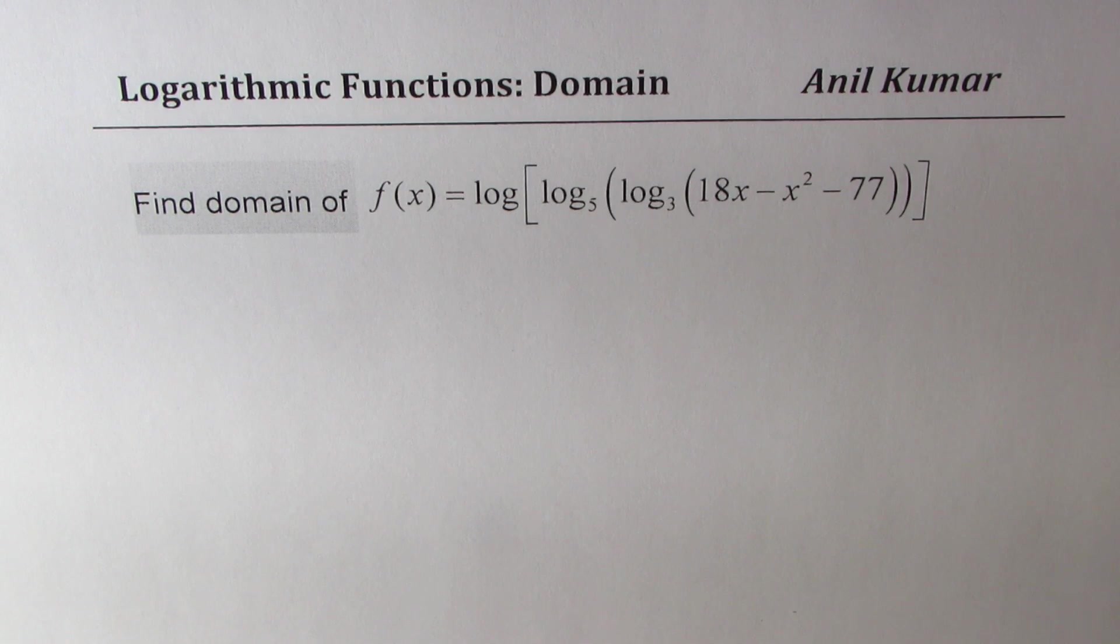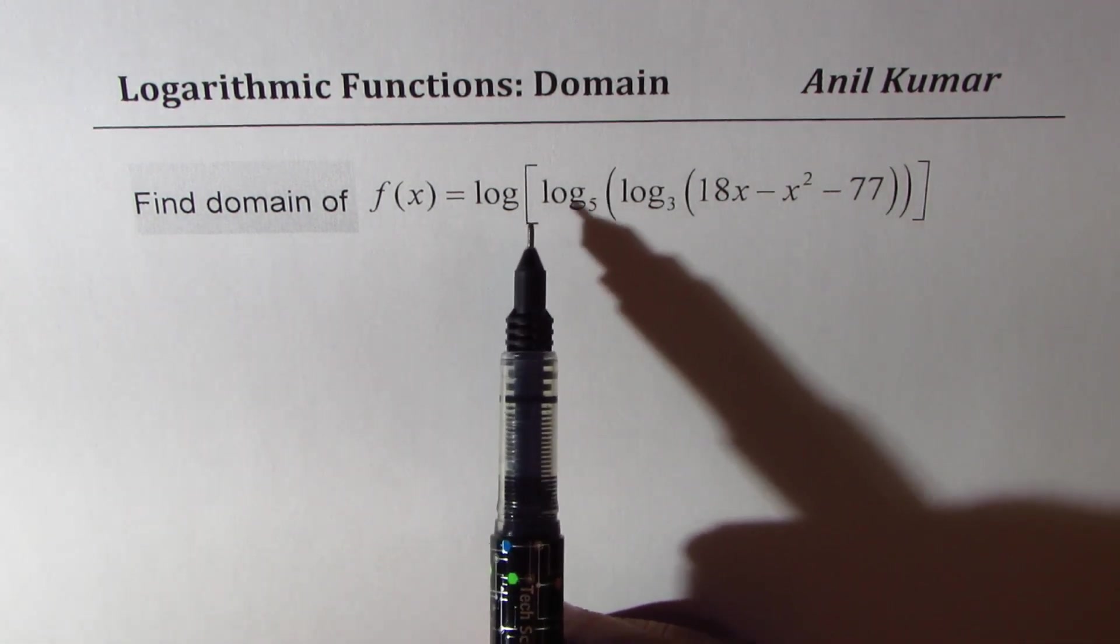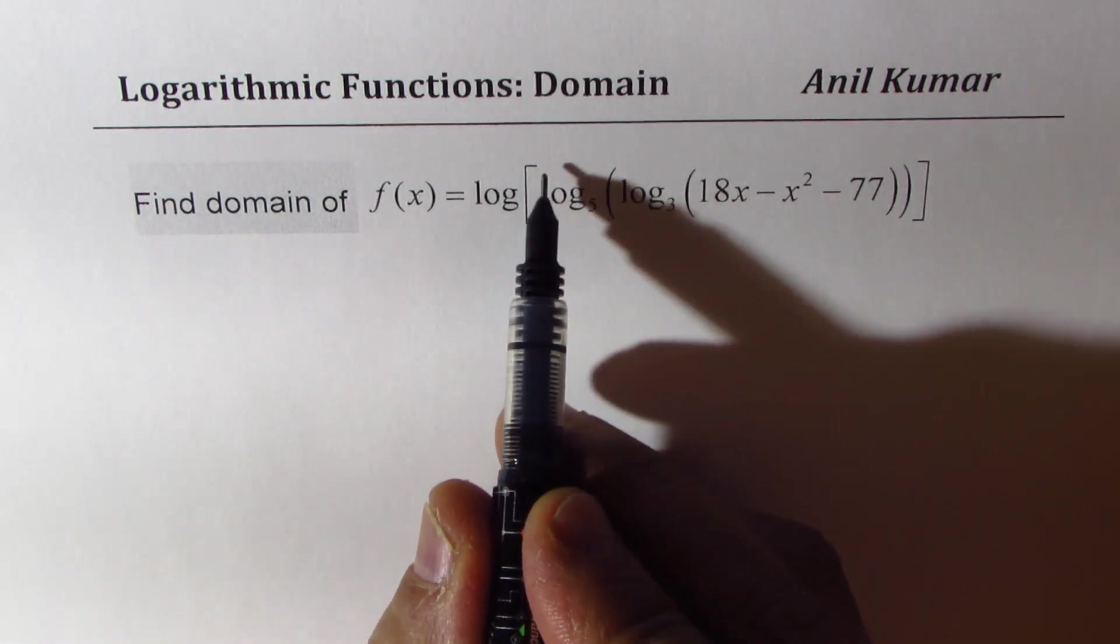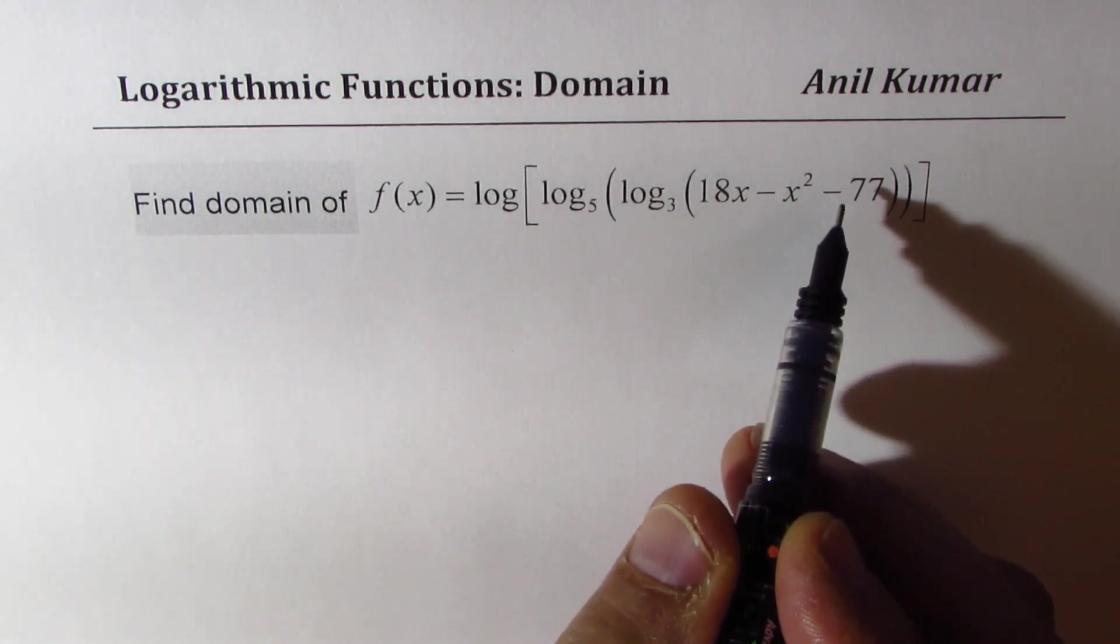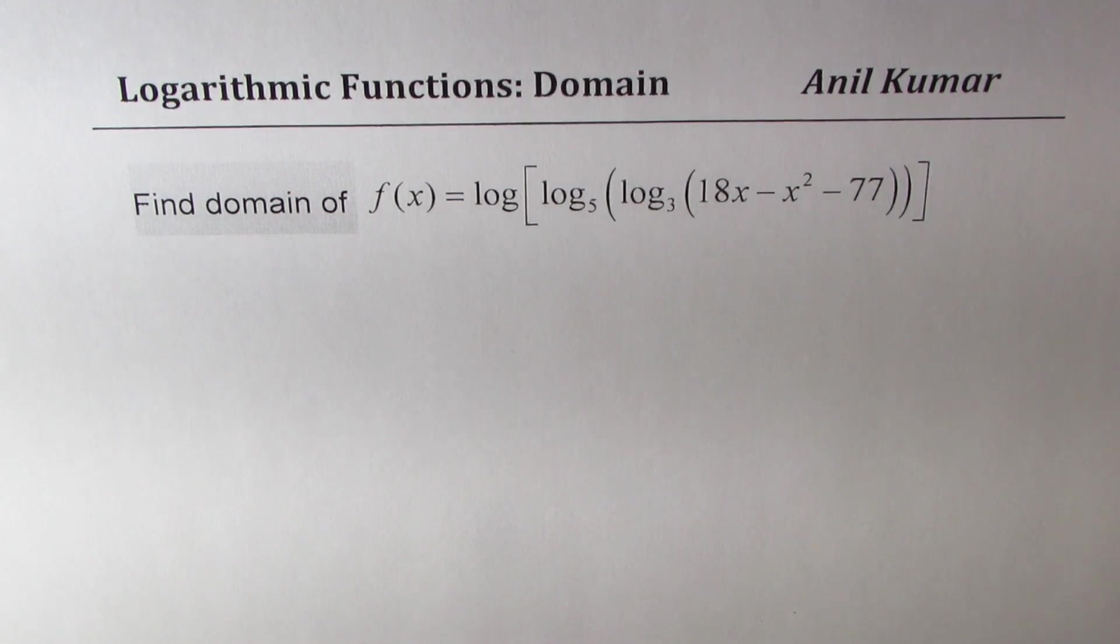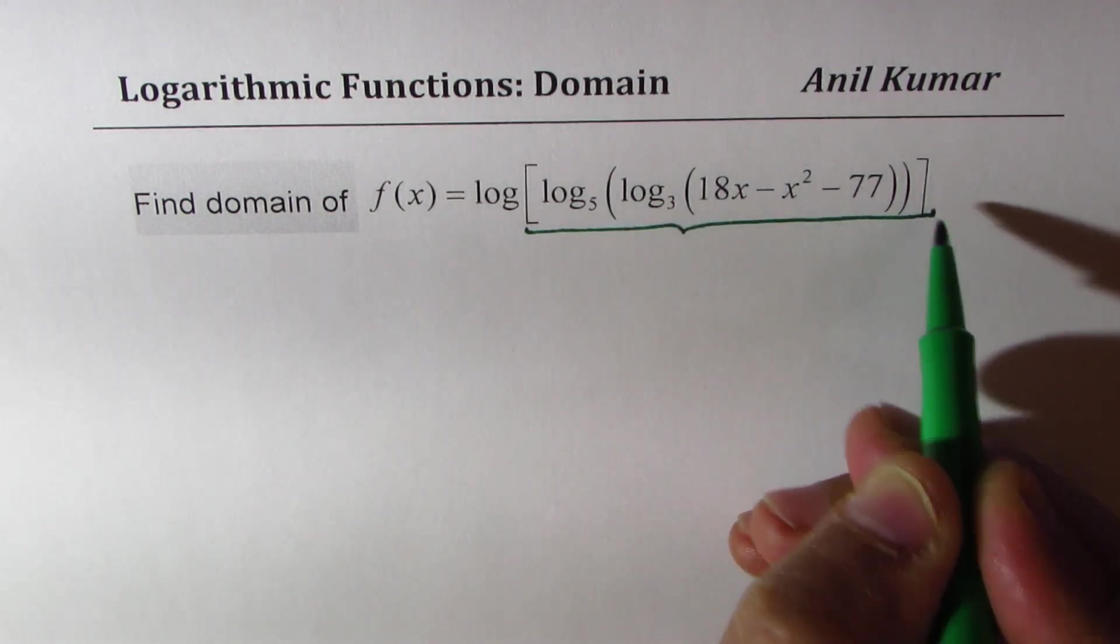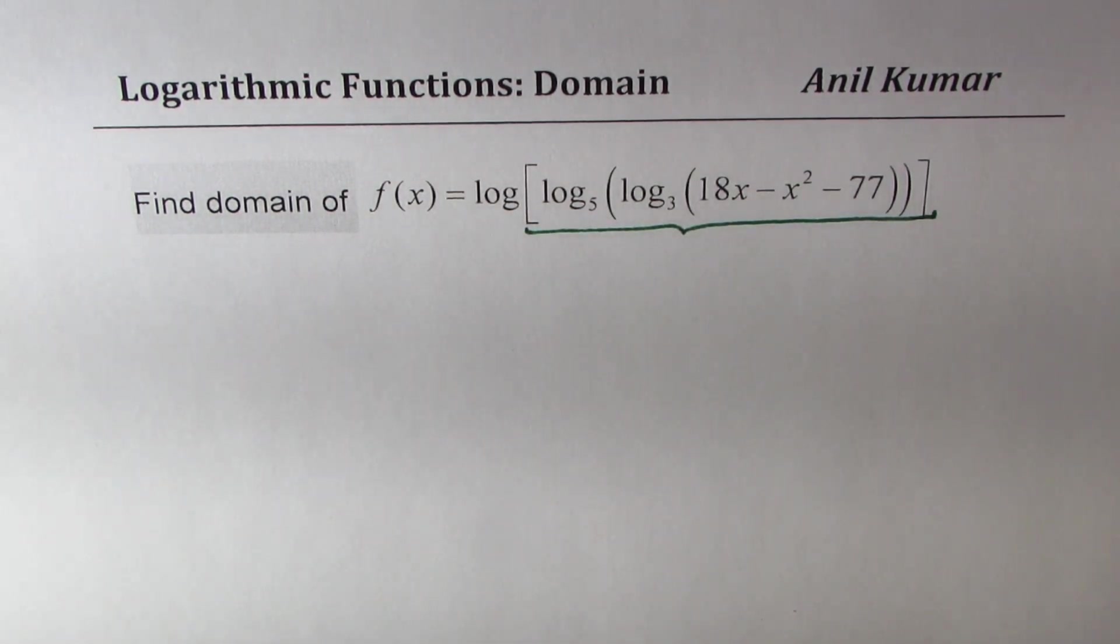How do we find the domain of such a function? To find the domain, we know that the argument of log must be greater than 0. So the first part is, starting from the outermost log, this argument should be greater than 0. That gives us one condition.